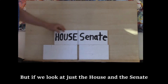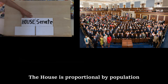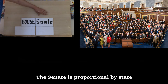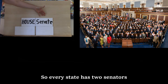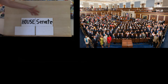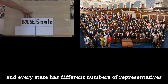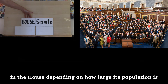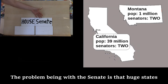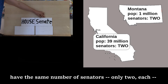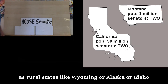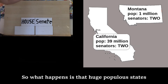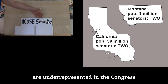If we look at just the House and the Senate: the House is proportional by population, the Senate is proportional by state, so every state has two senators. The problem is that huge states such as California, New York, or Texas have the same number of senators — only two each — as rural states like Wyoming, Alaska, or Idaho. So huge populous states are underrepresented in Congress.